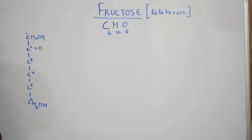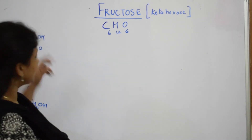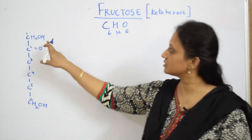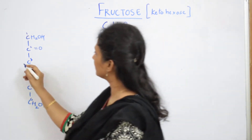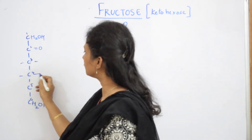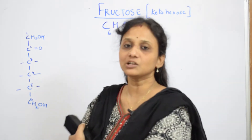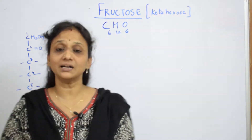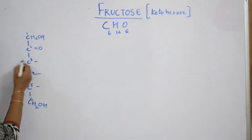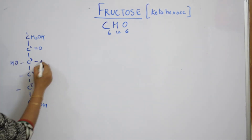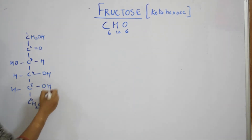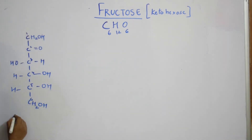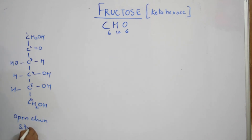Now let us fill the hydrogens. It is the same as glucose — here you have CH2OH at the first carbon, the second one is C double bond O, and the third, fourth, fifth carbons each have OH and H groups. The third carbon has OH and H, the fourth one has H and OH, the fifth has H and OH. This is your open chain structure of fructose.